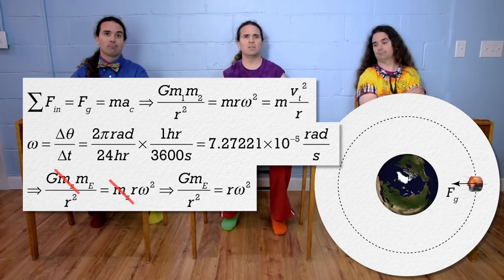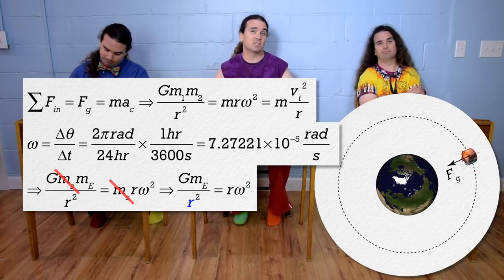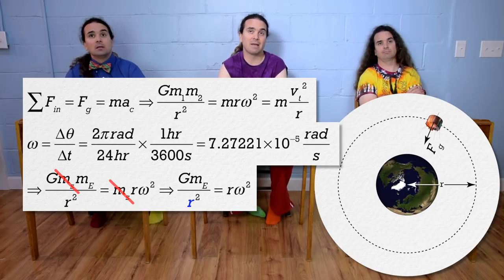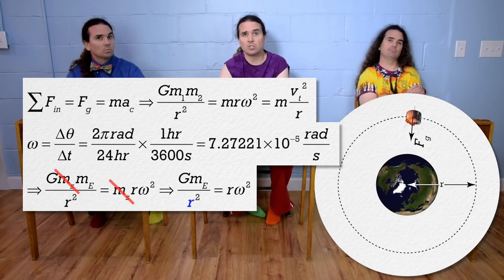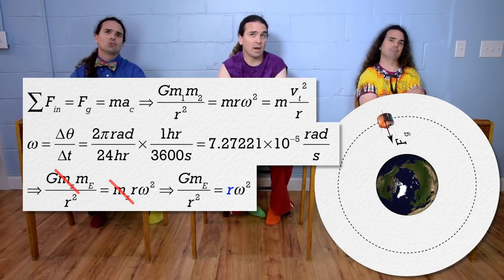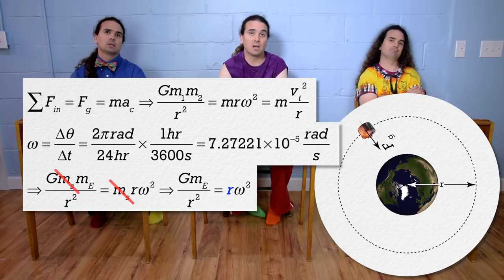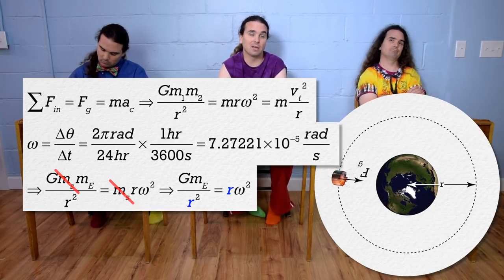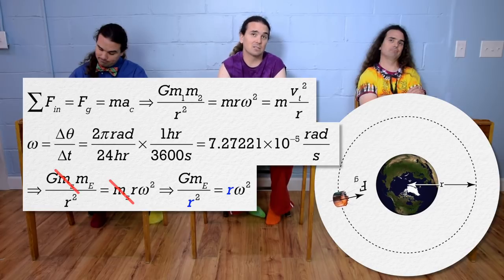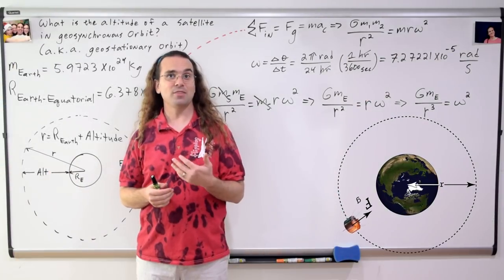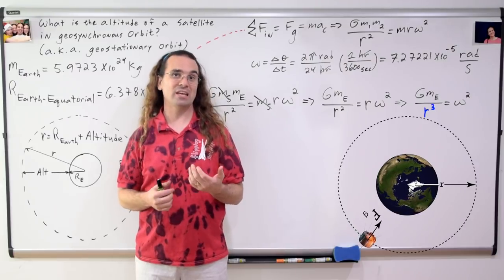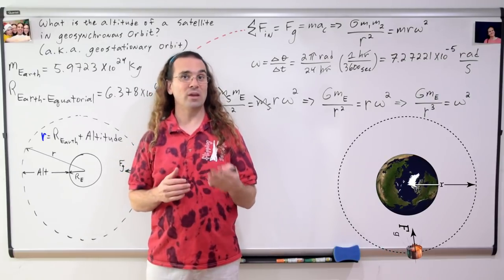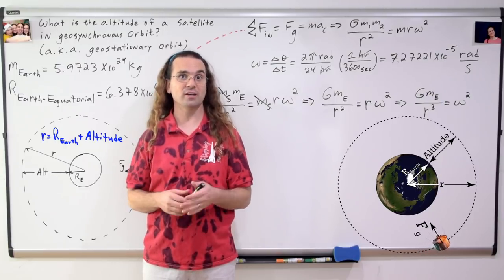The r in the universal law of gravitation is the distance between the centers of mass of the two objects — in this problem, that is the distance from the center of mass of the Earth to the center of mass of the satellite. The r which came from the centripetal acceleration equals radius times angular velocity squared is the radius of the orbit of the satellite. Those are the same thing in this problem. This also means we can divide the whole equation by radius, getting radius cubed in the denominator. Also, the radius of the satellite equals the radius of the Earth plus the satellite's altitude, or its vertical height above sea level.